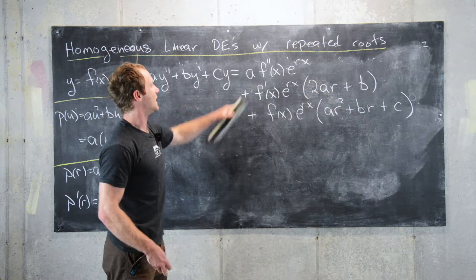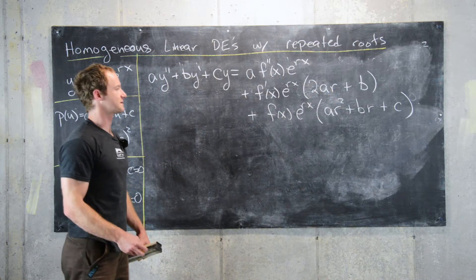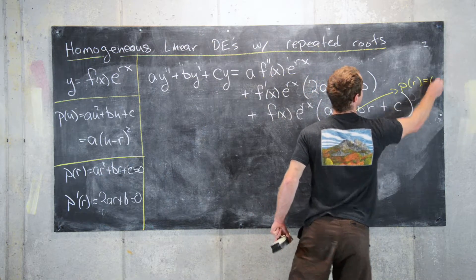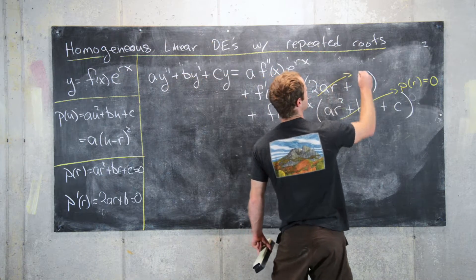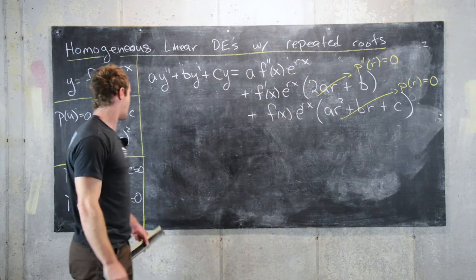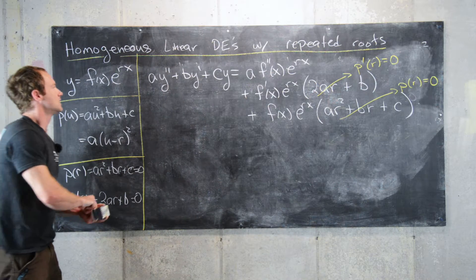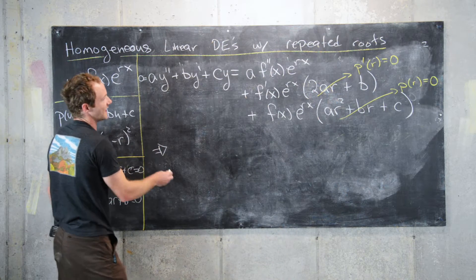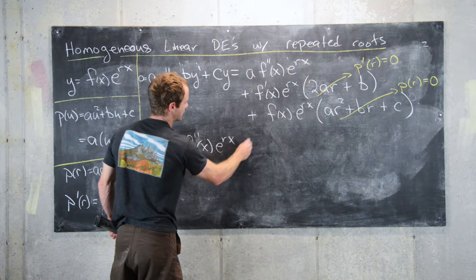After writing everything and combining the derivatives of f as like terms, notice that one part is equal to p evaluated at r, which equals 0. And then another part is equal to p prime evaluated at r, which is also equal to 0, by our assumption that r is a repeated root and the lemma from before. So, since our differential equation equals 0, that tells us that a·f double prime of x·e to the rx equals 0.